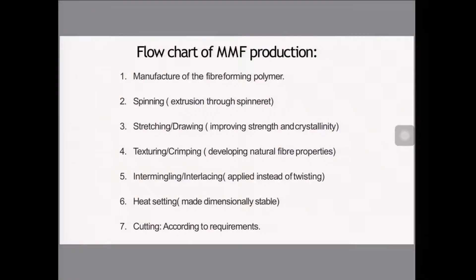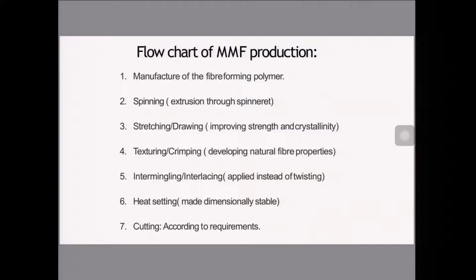This is a generalized flow chart of man-made fiber production. Initially, fiber-forming polymers are manufactured, then spinning takes place using different spinning systems — melt spinning, dry spinning, and wet spinning. This is followed by stretching or drawing for fiber alignment. Then, as required, texturizing or crimping, intermingling, interlacing, and heat setting are performed to stabilize the filament. Finally, it is cut into staple fiber or produced as continuous filament.